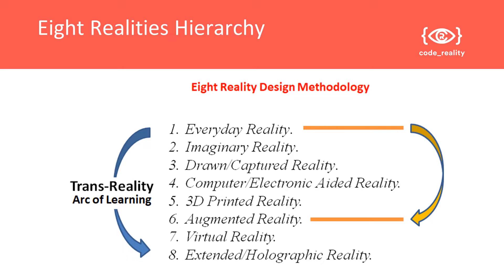Once that reality is captured — as a drawing or something else — it might be taken into a computer for processing. It might be turned into a 3D model, or special effects might be applied. This is a kind of generated reality within an electronic device, typically called a computer or electronic aided reality.